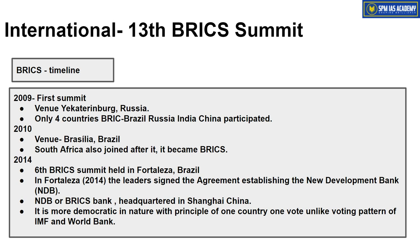The World Bank and IMF have long faced allegations that they act as strategic instruments in the hands of the US and other western countries — forcing other countries to adopt their strategic preferences. For example, in 1991, India had to bring LPG reforms to get a bailout from the IMF, and these reforms are considered aligned with US interests. So an alternative was needed. In BRICS, we created the New Development Bank as an alternative to the World Bank, and also created the Contingent Reserve Arrangement (CRA) as an alternative to the IMF, thereby reducing over-dependence on western-created institutions.